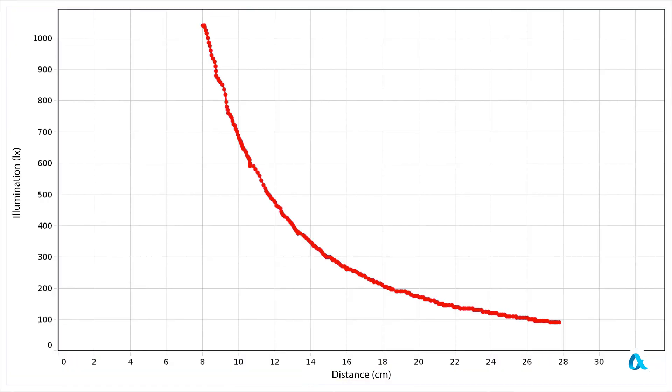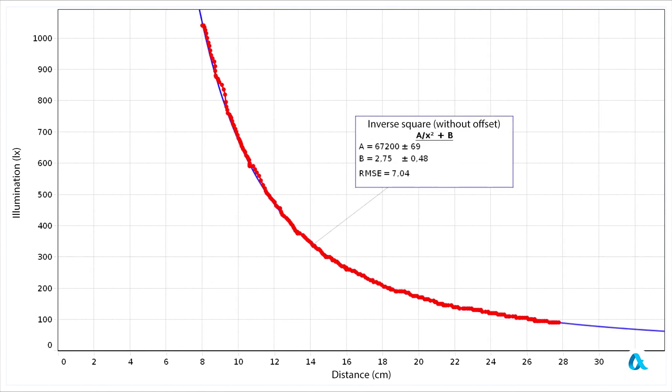Furthermore, I ultimately obtained this graph that illustrates the correlation between illuminance and distance. It is evident that illuminance decreases rapidly with distance. I fit the inverse square relationship, and this blue line closely aligns with the experimental points across the entire measurement range.